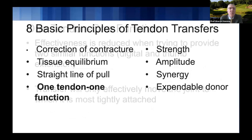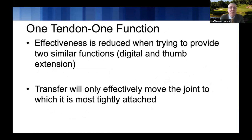One tendon, one function is another important principle. Effectiveness is reduced when you're trying to provide similar functions with the same transfer. If you have enough donor tendons to use a separate one to restore thumb function from finger function, you're going to be much better off. A transfer will only effectively move the joint to which it's most tightly attached. If you don't have the tension set right on the EDC, you may end up with some fingers having better extension than others.